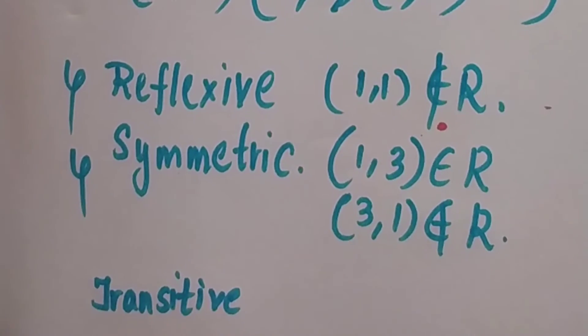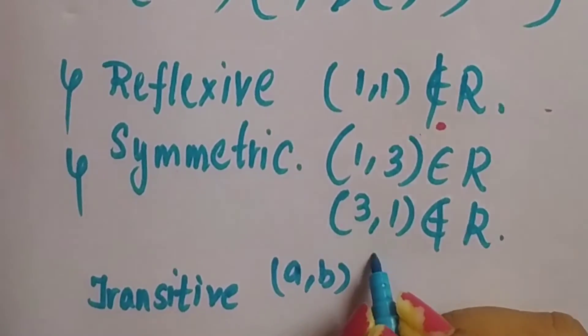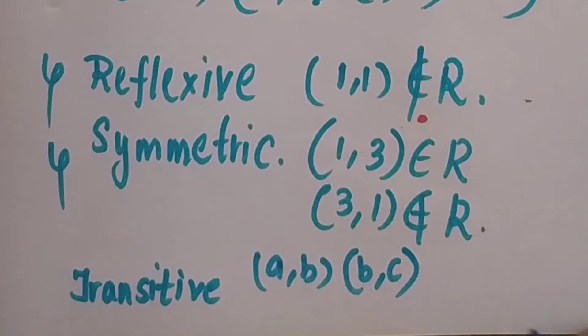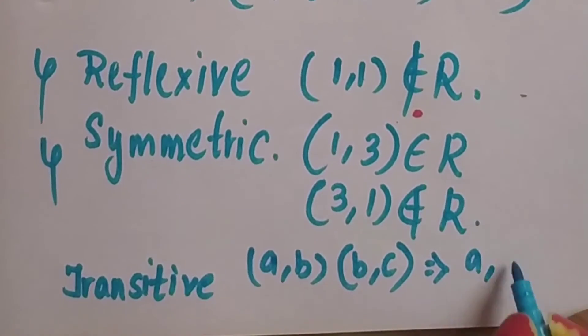Now the last one is transitive. What is the condition for transitive? If a, b is present and b, c is present, then this will be a, c.